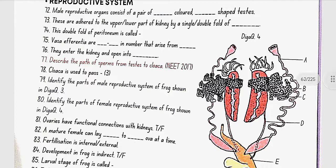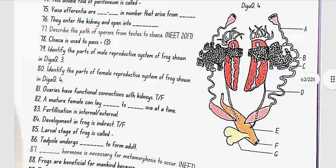Identify the parts of female reproductive system of frog shown in diagram 4. So, here in diagram 4, A is the oviduct, C is ovary, B is the ureter, E is cloaca, F is cloacal aperture, and G is urinary bladder.